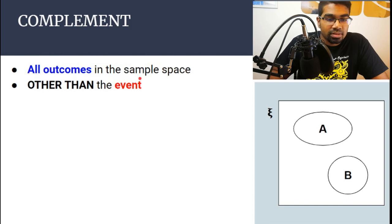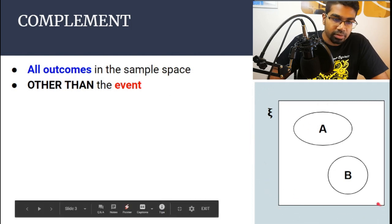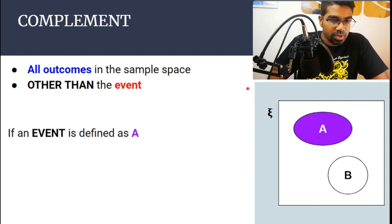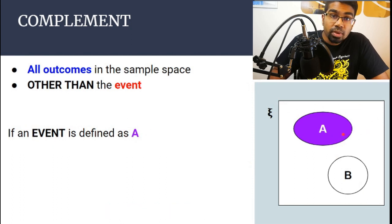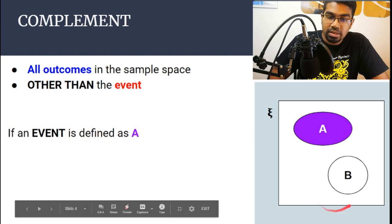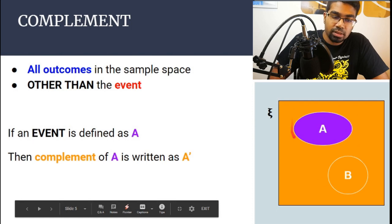The complement of an event is all outcomes in the sample space other than the event itself. To visualize it, let's look at this Venn diagram on the right. If an event is defined as set A, then the complement of A will be everything outside of A inside the universal set — all other outcomes other than A itself.